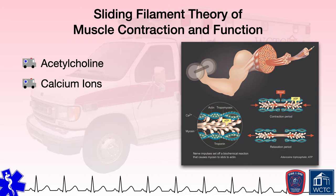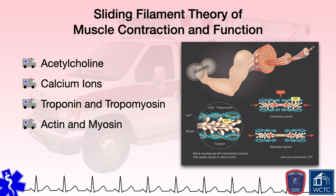These calcium ions then bind with troponin in the thin filaments, changing its shape and moving tropomyosin from the binding site of the actin, exposing the actin binding sites. The myosin heads then attach to the actin binding sites, forming a cross bridge. The breakdown of adenosine triphosphate releases energy, which enables the myosin to pull the actin filaments inward, thus shortening the muscle, causing muscular contraction. This occurs across the entire length of every myofibril in the muscle cell. Given that the actin slides over the myosin during this process, that is where the name sliding filament theory of muscle contraction is derived.